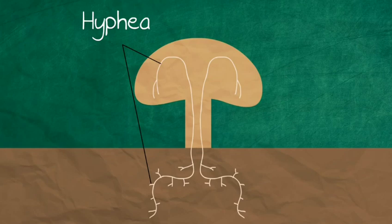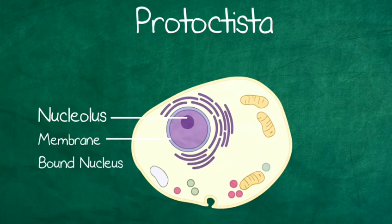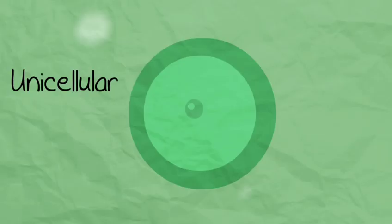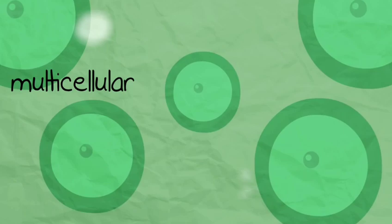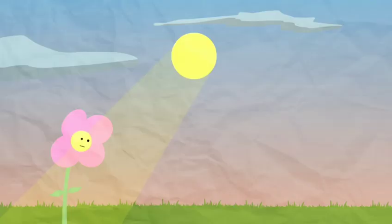The Protoctista kingdom are eukaryote-like animals and plants. They can be unicellular and multicellular, like the fungi. They have cell walls, sometimes with polysaccharides. They are autotrophic and heterotrophic.